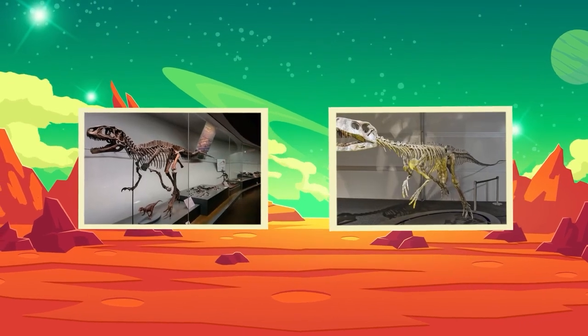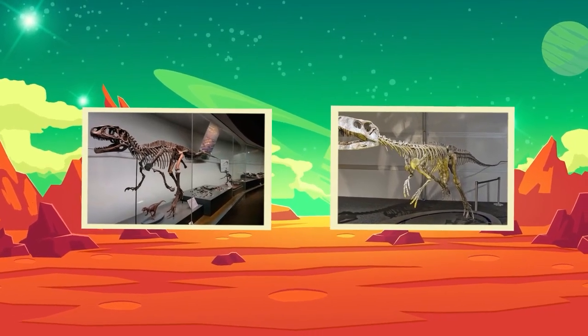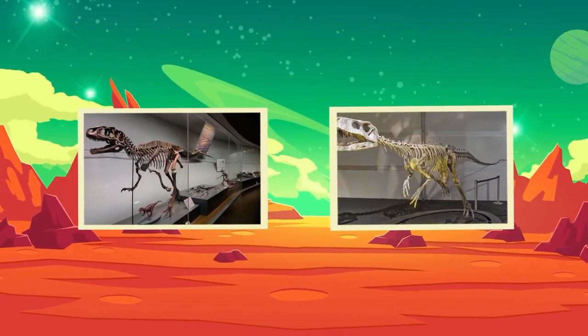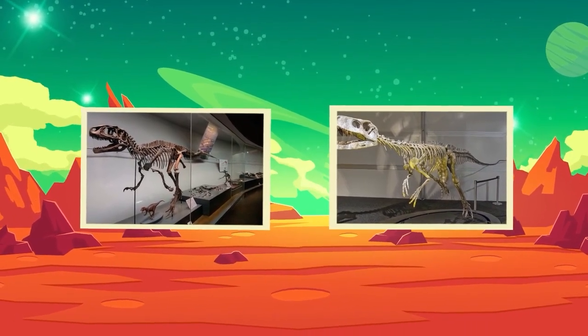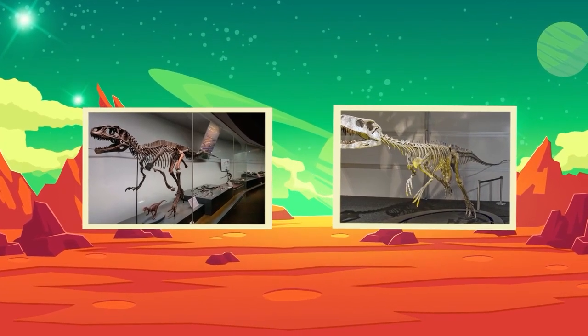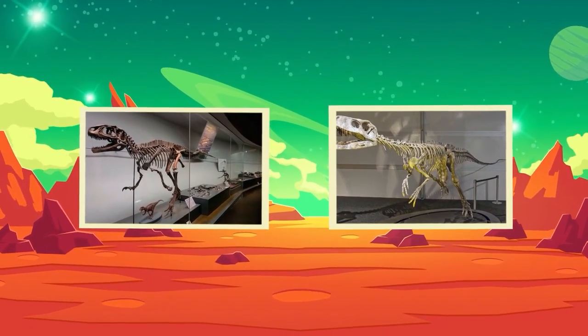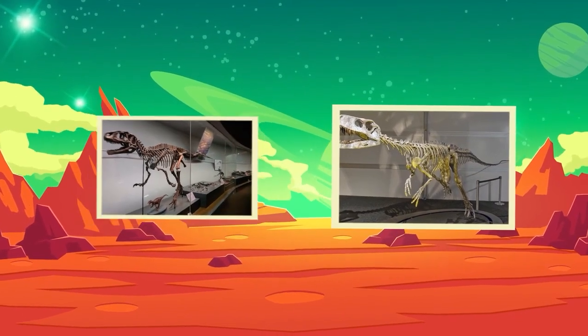But wait. If dinosaurs lived so long ago, how do we know about them? Scientists called paleontologists dig up fossils. These are the bones, teeth, and footprints of dinosaurs that turned into rock. They use these fossils to build skeletons and imagine what dinosaurs looked like. Isn't that cool? The next time you see a dinosaur skeleton in a museum, you'll know it's made from real fossil pieces.